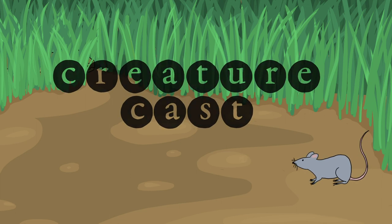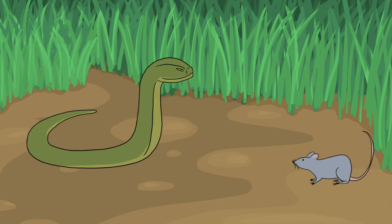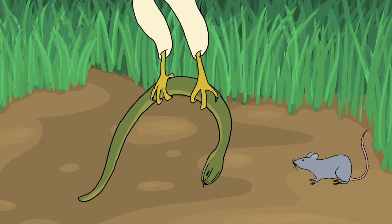Predators need to capture prey to survive. To do this, they develop specialized tools such as the fangs of a viper or the claws of an eagle.